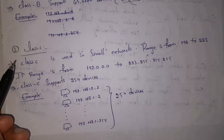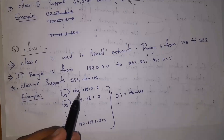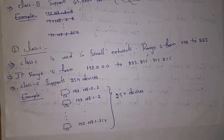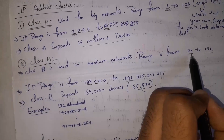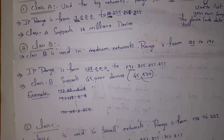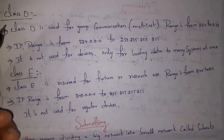The third one is Class C. Class C IP address is used in smaller networks and supports exactly 254 devices — that is, Class C IP address can be given to a maximum of 254 devices. Class C IP address ranges from 192 to 223.